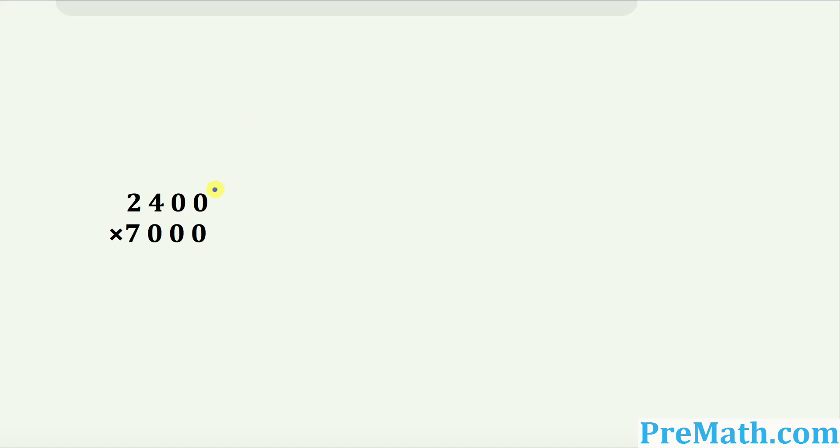How about this example? How many trailing zeros are there? For 2,400, two zeros. And here, how many trailing zeros? Three. Three and two makes five zeros. I'm going to put them down right up here.